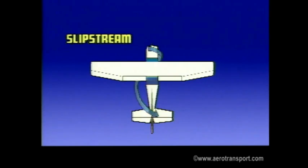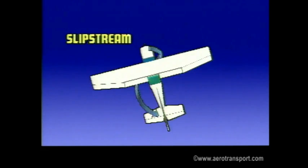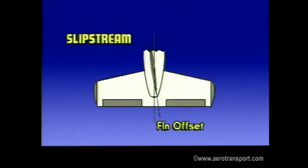Slipstream is the mass of air pushed backwards by the propeller. As this air moves back, it strikes the fin or rudder of the aircraft, pushing it to the right. This affects the directional and lateral balance of the aircraft and is compensated for by offsetting the fin for normal cruising flight. This balance, of course, will be upset when engine power is changed.